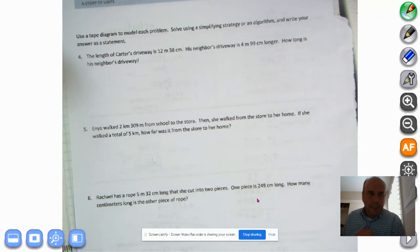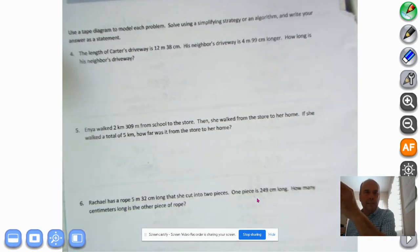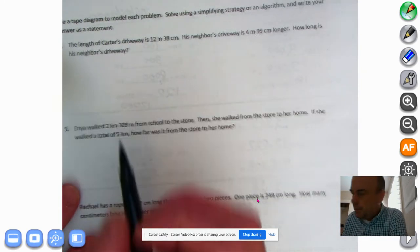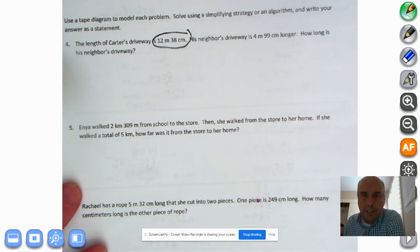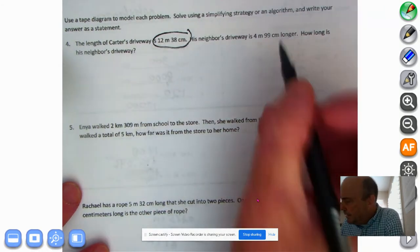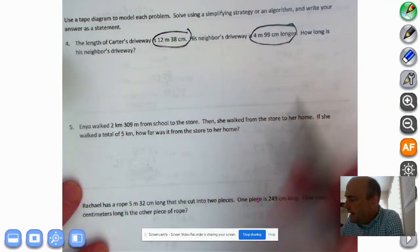Let's take a look at our very first one. It says the length of Carter's driveway is, let's zoom in here so I can actually see this, 12 meters, 38 centimeters. I'm going to circle that right there. His neighbor's driveway is 4 meters, 99 centimeters, and longer. How long is his neighbor's driveway?